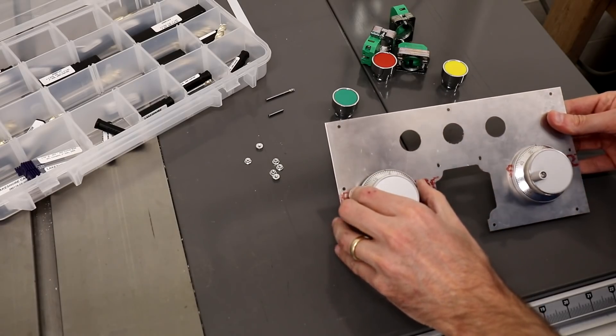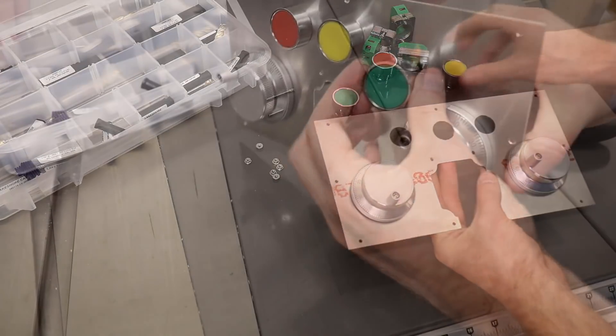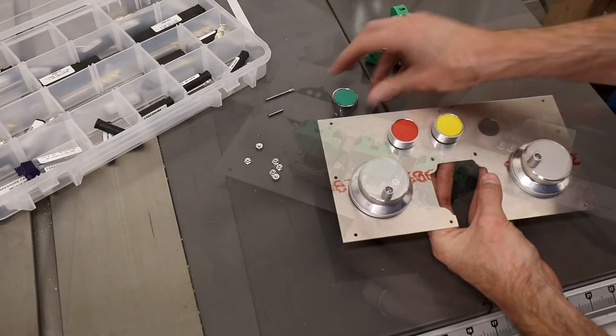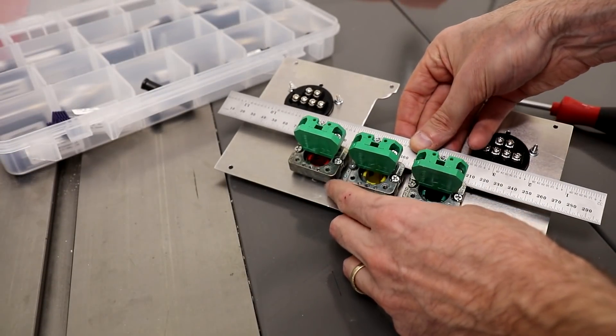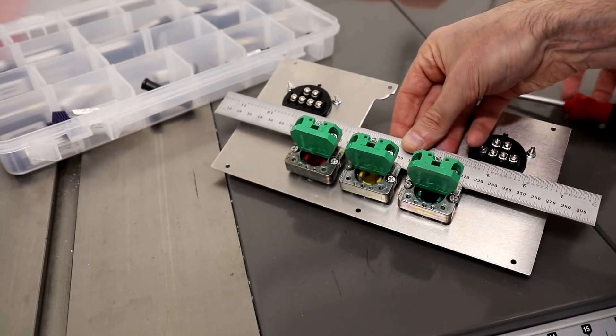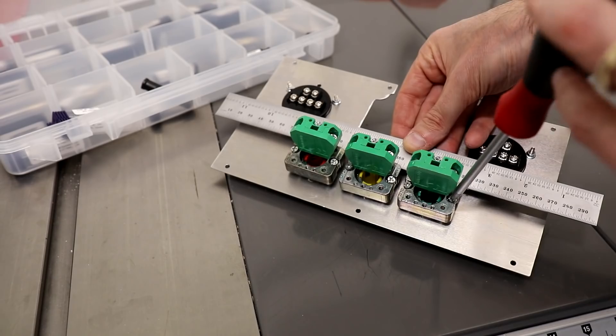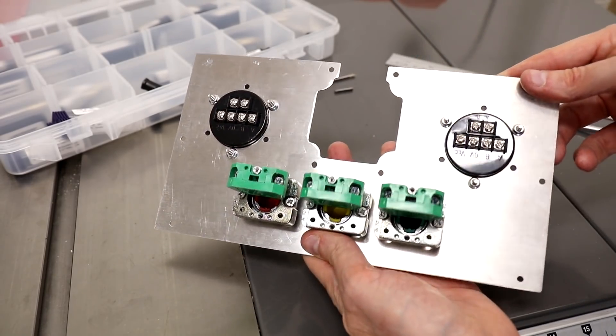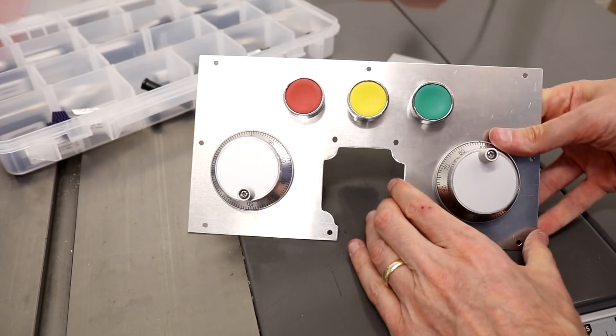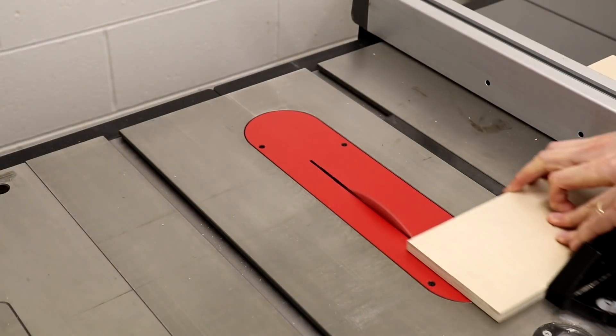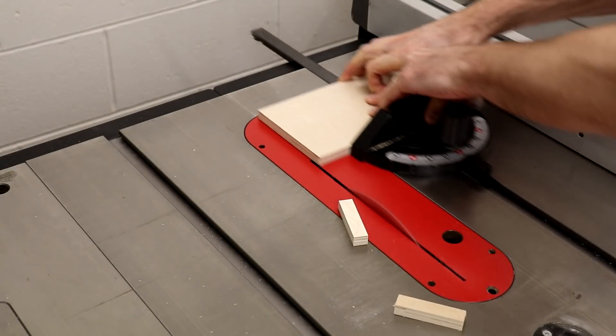100 pulse per revolution MPG wheels. They have differential quadrature output which means they can be used in a way that's immune to common mode noise and that you can also achieve 400 pulses per revolution. However the detents in the wheel limit where the wheel will be positioned, undermining the quadrature part of the MPG wheel. So because of the detents, 100 pulses per revolution is probably the effective maximum.